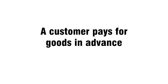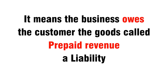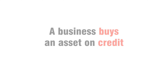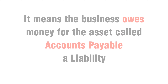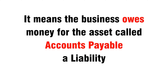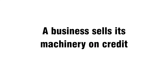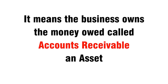A customer pays for goods in advance — it means the business owes the customer the goods, called prepaid revenue, a liability. A business buys an asset on credit — it means the business owes money for the asset, called accounts payable, a liability. A business sells its machinery on credit — it means the business owns the money owed, called accounts receivable, an asset.